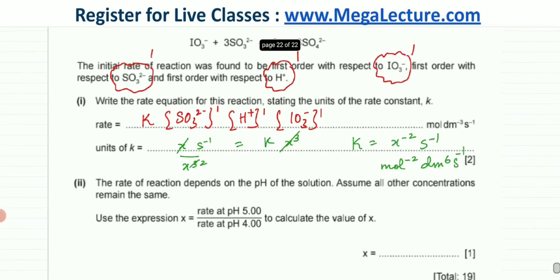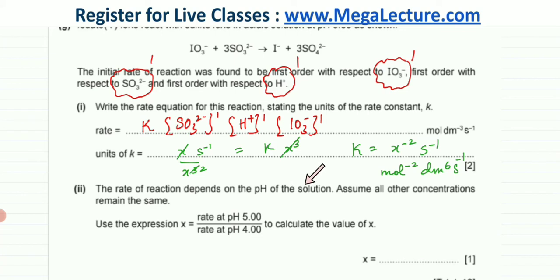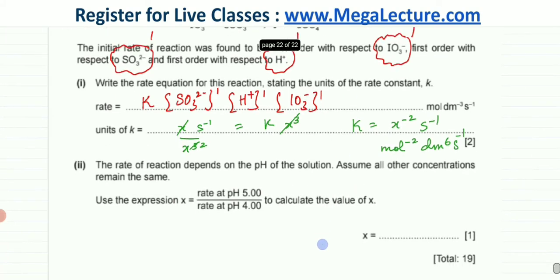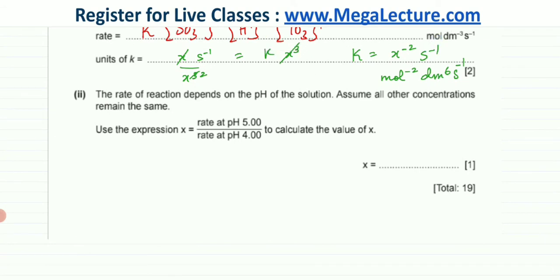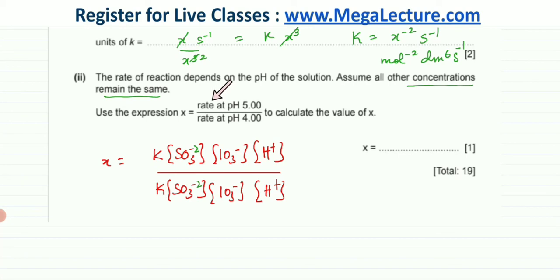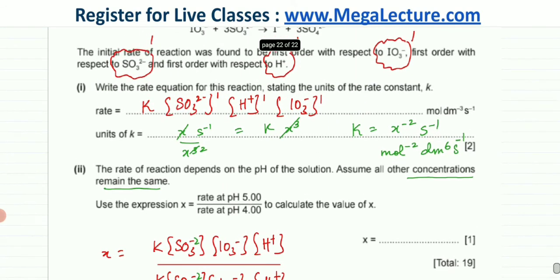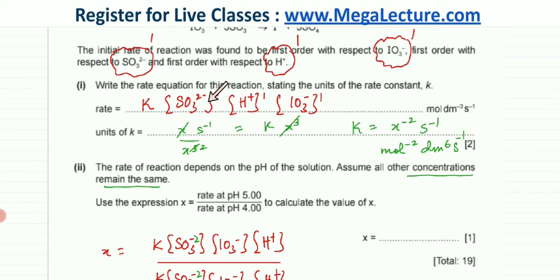Moving to the next part: the question states that the rate of the reaction depends on the pH of the solution. Assuming all other concentrations remain the same, we use the rate expression to calculate the value of x. The rate equation is rate = k[SO3²⁻][H⁺][IO3⁻], with all three orders equal to 1.